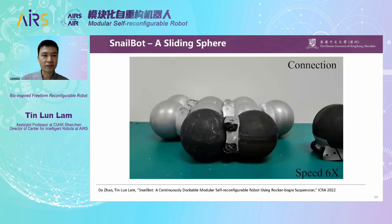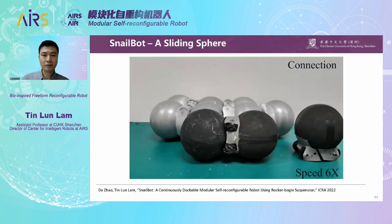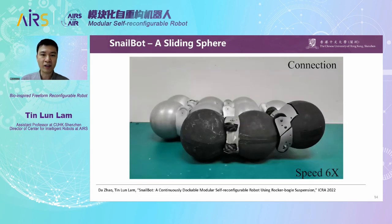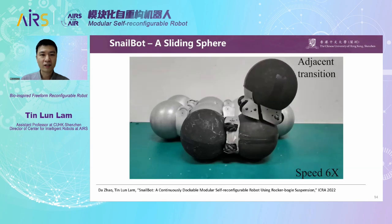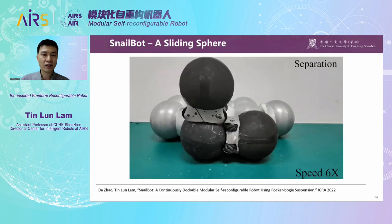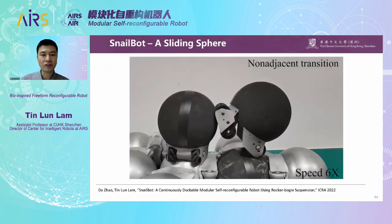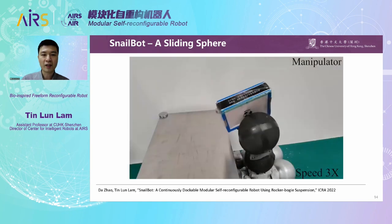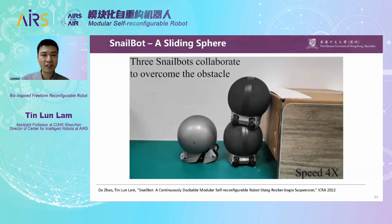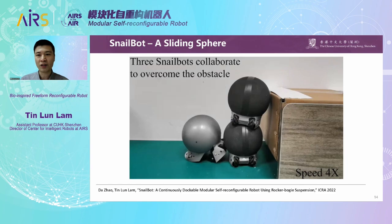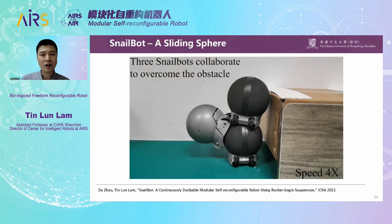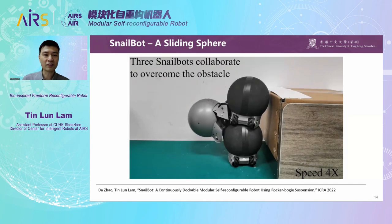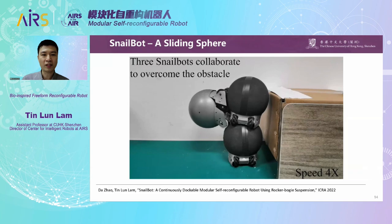Here you see the SnailBot in action. A SnailBot can climb up from the ground onto another SnailBot, very similar to a snail. It can also climb from one SnailBot to another SnailBot vertically. We also demonstrate an interesting application: a group of SnailBots forming a manipulator to manipulate objects. In one example, they cooperate to overcome a much higher obstacle — the SnailBot climbs up using others and eventually gets up onto the box.